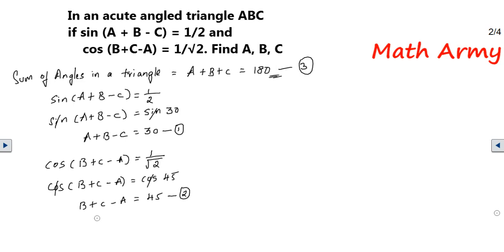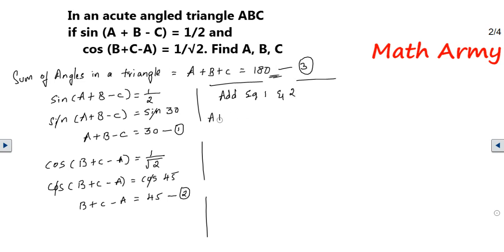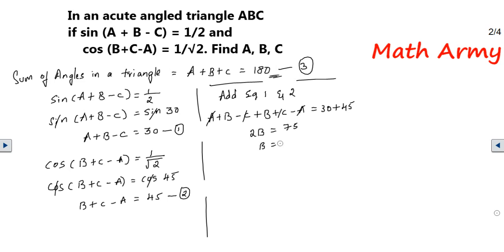I'm trying to fit everything in the same frame so there will be no loss of continuity. Adding equation 1 and equation 2: (A + B - C) + (B + C - A) = 30 + 45. Here +A and -A cancel, and -C and +C cancel. What you are left with is 2B = 75°. Therefore B = 75/2 = 37.5°.